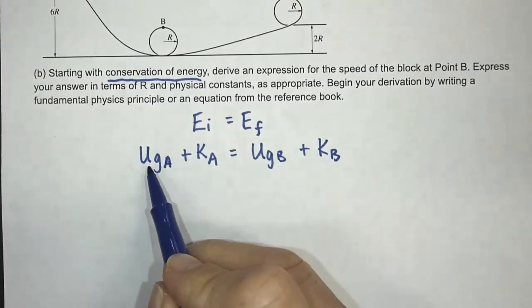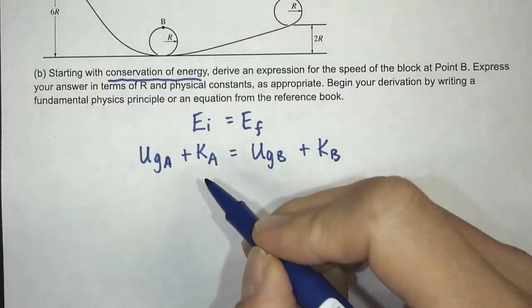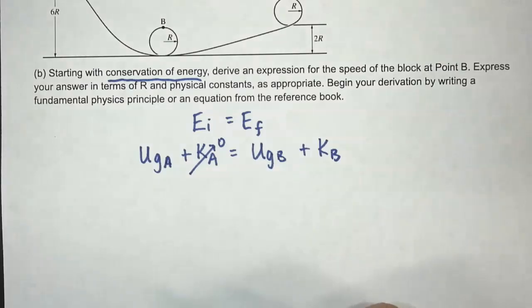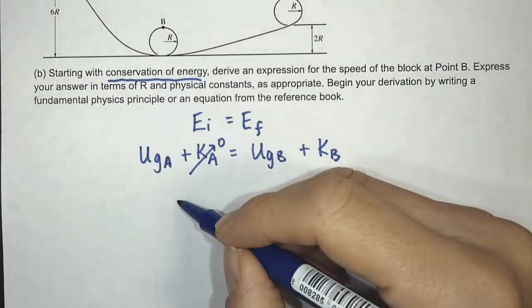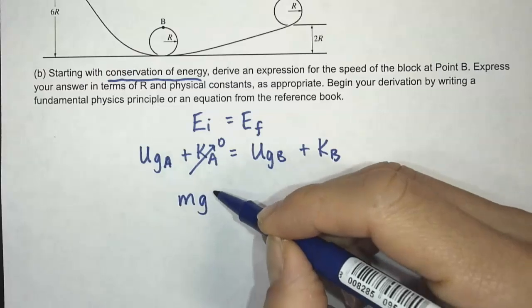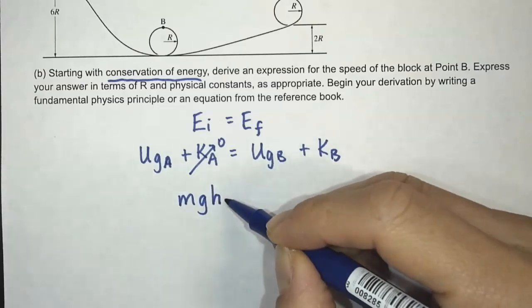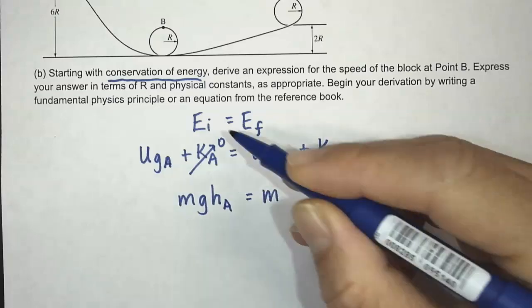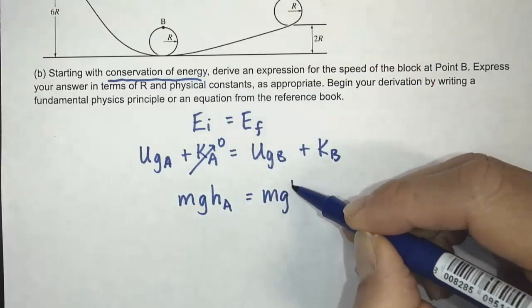So we know that this is going to be zero, right, because it initially starts off with zero velocity, so zero kinetic energy. The equation for potential energy is MGH. And then I'm going to call the initial height HA, is equal to the height at B. The potential energy at B is MgHB.